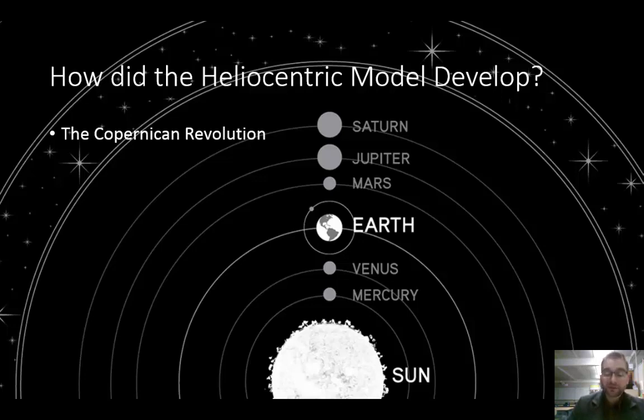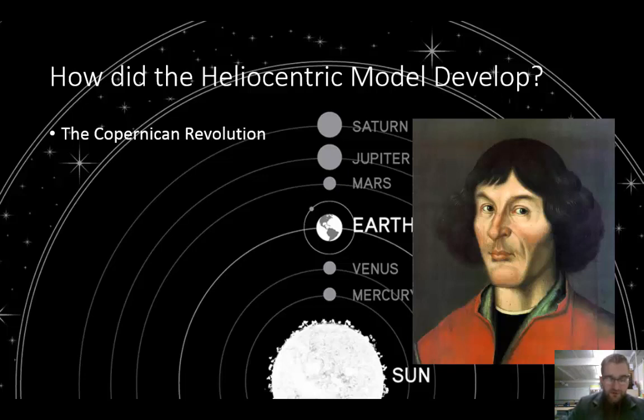The Copernican Revolution. The Polish astronomer, Nicholas Copernicus, further developed the heliocentric model. Copernicus was able to work out the arrangement of the known planets and how they move around the Sun. He published his work in 1543. Copernicus's theory would eventually revolutionize the science of astronomy. But at first, many people were unwilling to accept his theory. He needed more evidence in order to convince people.